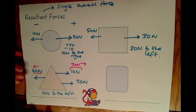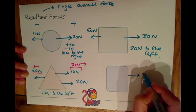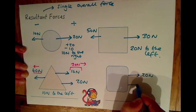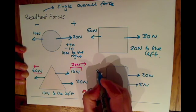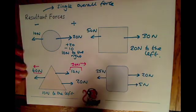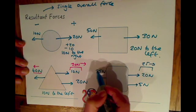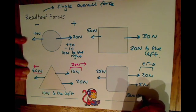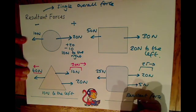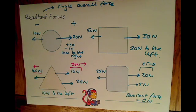We can also have a case where the resultant force is zero. For example, if we had 20 newtons and 5 newtons in one direction and 25 newtons in the opposite direction, we've got 25 newtons in total to the right and 25 newtons to the left, so our resultant force is zero newtons — there's no resultant force acting on the object when you take both directions into account.